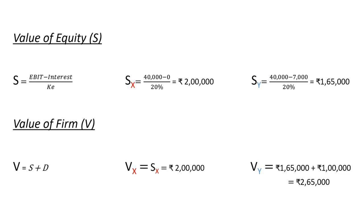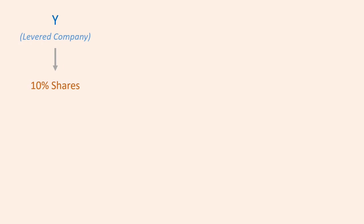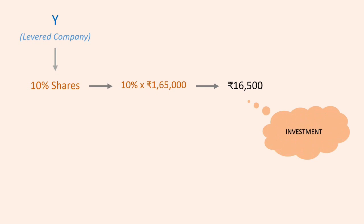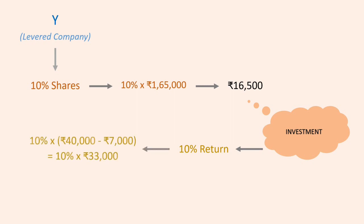Let us understand the arbitrage process. Suppose you are holding 10% shares in firm Y, the levered company — that is 10% of rupees 1 lakh 65,000, meaning an investment of rupees 16,500. This investment fetches a 10% return on profit: rupees 40,000 minus rupees 7,000 interest equals rupees 33,000, and 10% of 33,000 is rupees 3,300 — the return for holding shares in Y, the levered company.